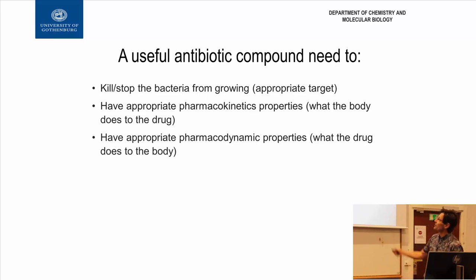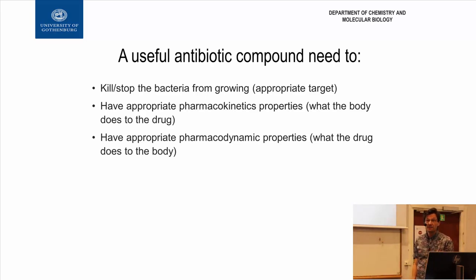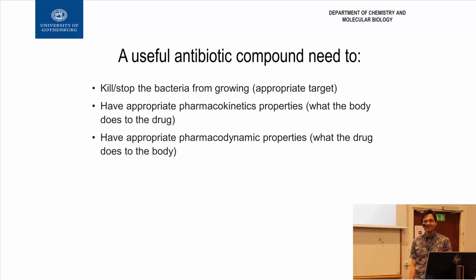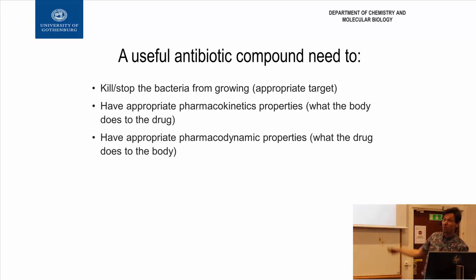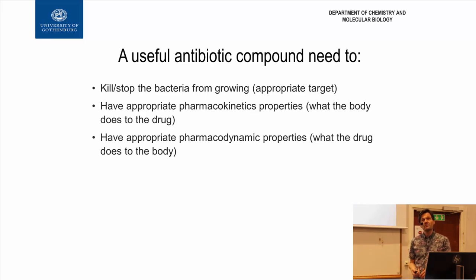We need appropriate pharmacokinetic properties — that means what the body does to the drug. The problem is, if the body breaks down the antibiotic to a toxic metabolite, it could be unhealthy for us. The compound also needs appropriate pharmacodynamic properties — what the drug does to the body — meaning, is it toxic by itself? Does it interact with other things in our bodies? Bear in mind, antibiotics should only interfere with bacteria, not with our cells.